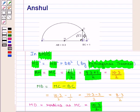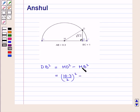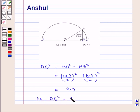Putting these values into the equation, DB squared equals MD squared minus MB squared, which equals 10.3 by 2 whole squared minus 8.3 by 2 whole squared, and this equals 9.3. So DB squared equals 9.3, which implies DB equals square root of 9.3.